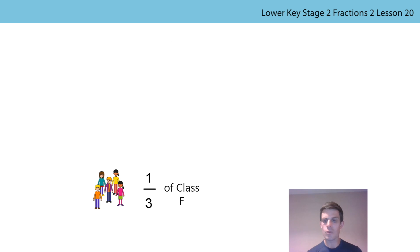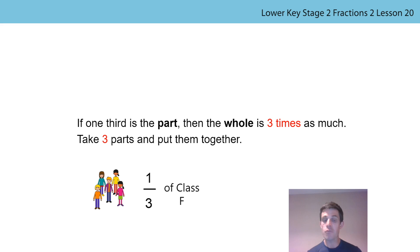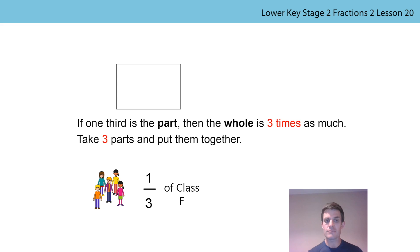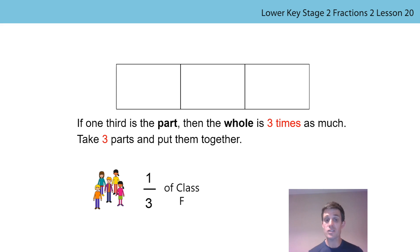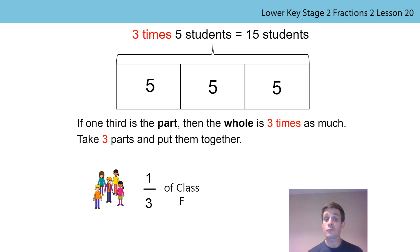Now let's look at class F. There are five children which is a third of class F. And if one third is the part, then the whole is three times as much. So we need to put three parts together to form the whole. We know that five children is one third — one of our parts — so every other part would also be five children. So three times five students gives us our answer of 15 students. Now we know how many children are in class F.